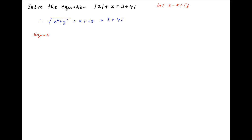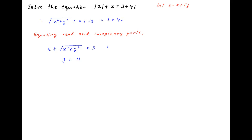Now equating the real and imaginary parts across the left-hand side and the right-hand side, we get x plus square root of x squared plus y squared is equal to 3, and y is equal to 4. Let's call these equations 1 and 2 respectively.